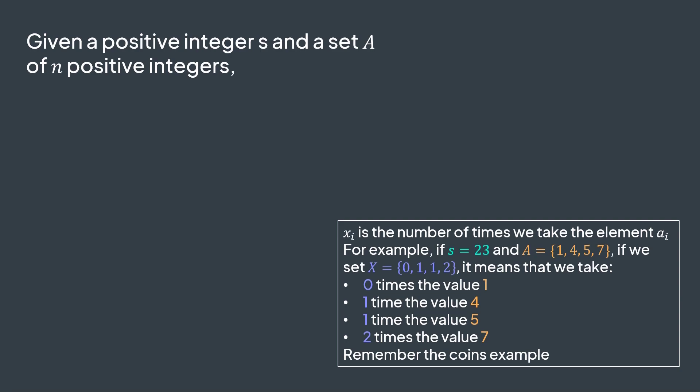But, we don't want to assign these values x randomly, we want to minimize their sum, because we want to minimize the number of elements we take, whether coins, jumps, or glasses.